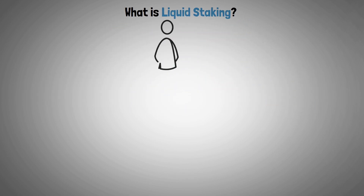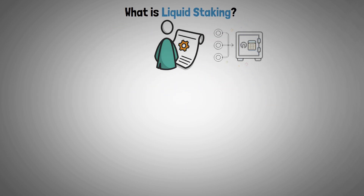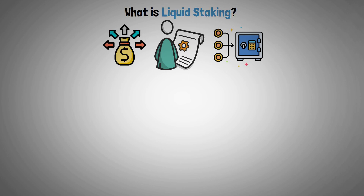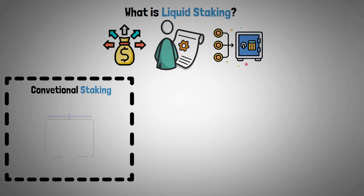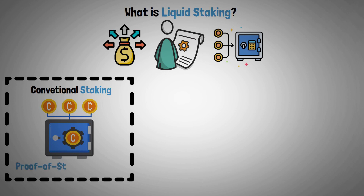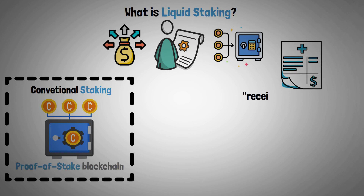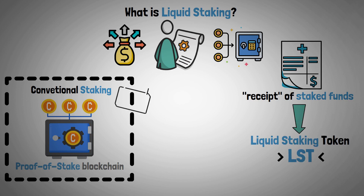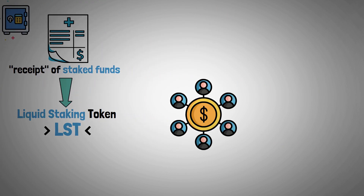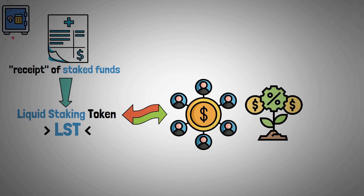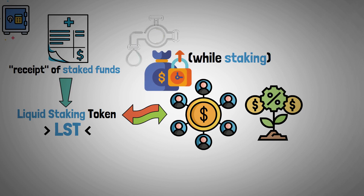So let's start with what is liquid staking. Liquid staking solution users can stake their tokens and access liquidity at the same time. As with conventional staking, you can make contributions to a proof-of-stake blockchain. However, you receive a receipt of your staked funds in the form of a liquid staking token, or LST, as opposed to being constrained by bonding restrictions. Other DeFi systems can make use of this LST token to create more yield and reward opportunities. The fact that users can still access their money while staking keeps the protocol liquid.